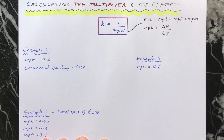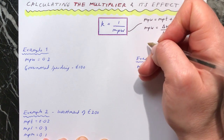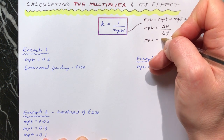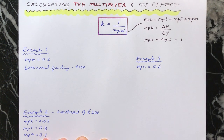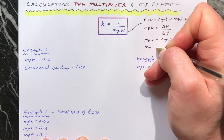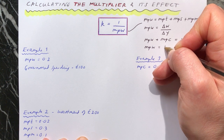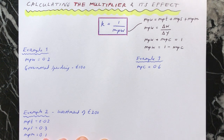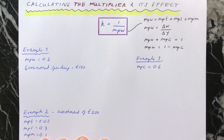Also, we know that the marginal propensity to withdraw plus the marginal propensity to consume is equal to one. And therefore we could also say that the marginal propensity to withdraw equals one minus the marginal propensity to consume. You might want to look through all of these to refresh your memory and work out why they are as written, and then go on to the three examples.